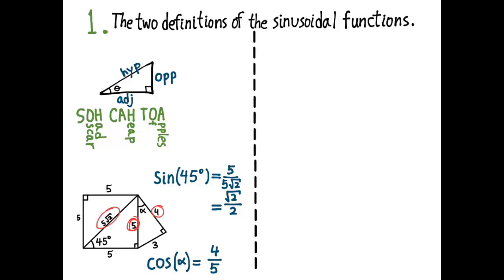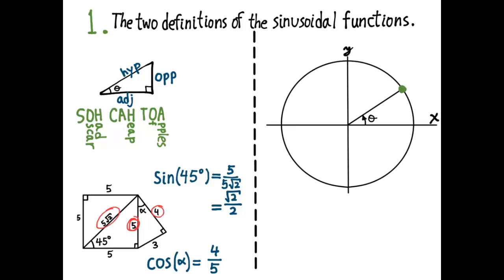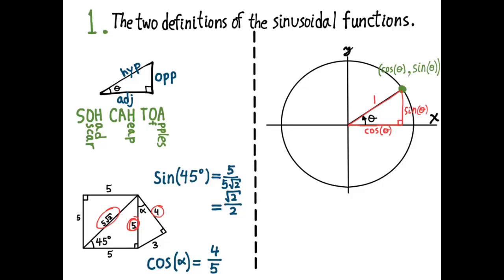That's how the triangle trigonometry definitions work. They're very good for angles between 0 and 90 degrees. But if you want to go all the way around the circle, the better definitions are based on the unit circle. The point on a unit circle at angle theta has coordinates (cosine θ, sine θ). The x-value is cosine theta, the y-value is sine theta, and the angle is measured counterclockwise from the positive x-axis. In the first quadrant, you can draw a triangle and see this is equivalent to the triangle definition.